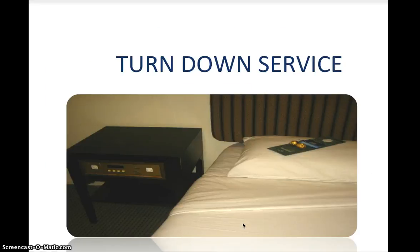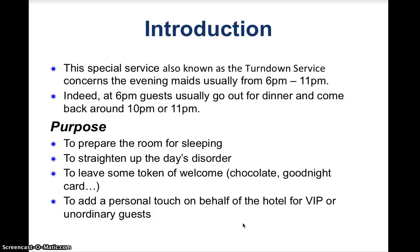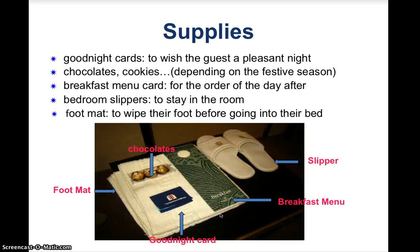The last task is turn down service, a VIP service provided between 6pm and 11pm only for VIP rooms. Its purposes are to prepare the room for sleeping, straighten up the day's disorder, leave a token of welcome such as chocolate and a good night card, and add a personal touch on behalf of the hotel for VIP guests. Supplies include a good night card from the general manager, a foot mat or bath mat, chocolates, the breakfast menu, and slippers.